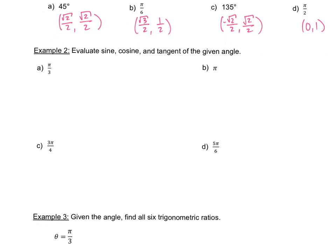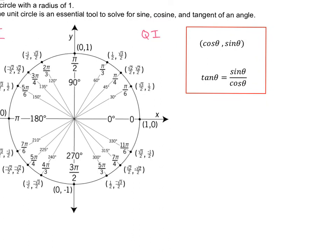For example 2, they want you to evaluate the sine, cosine, and tangent given the angle. We need to locate what the coordinates are, because sine and cosine are the x and y values of the coordinates. Tangent is going to be y over x — since sine is y and cosine is x, tangent equals sine over cosine, which is y over x.